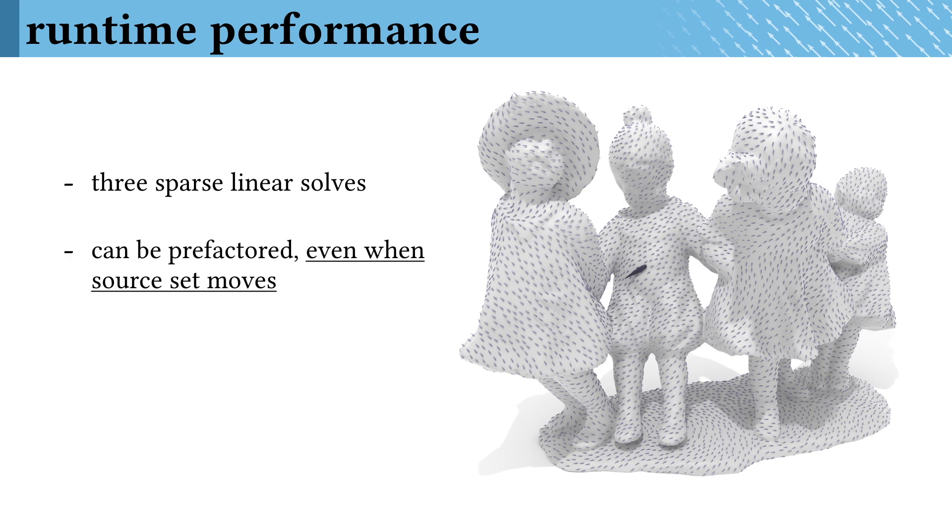On a 100,000-face mesh, this amounts to being about 0.7 seconds of precompute and about 30 milliseconds per solve afterwards. This was on a single core of an i7 CPU using SuiteSparse for linear solves.